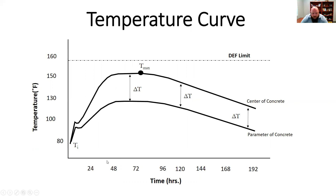Typically, within 36 to 120 hours, we're going to find most of the peaks for this concrete. This is just typical — if you're using an accelerator it may be quicker, if you're using a retarder maybe a bit later, and secondary cementitious materials that react at a later age can also affect when you see the largest differential temperature change. This is just basic theory for the temperature curve.